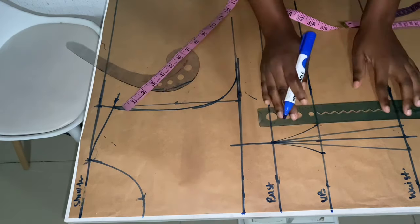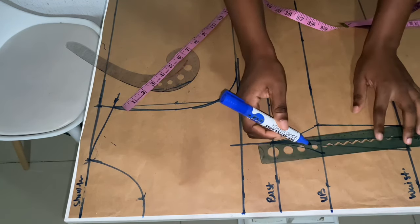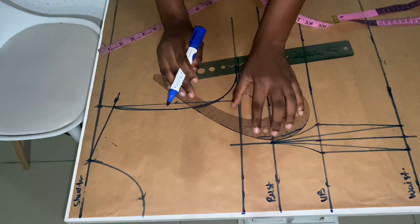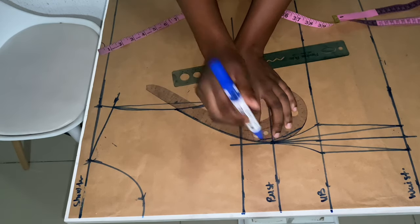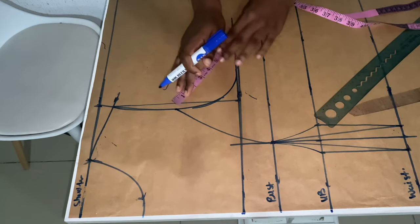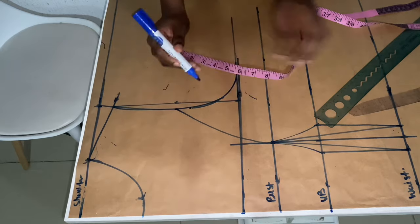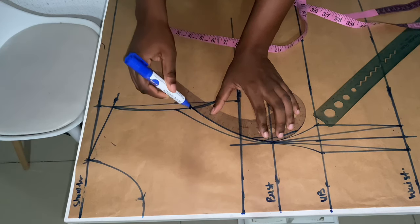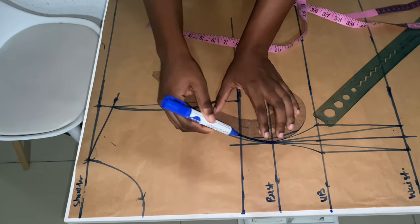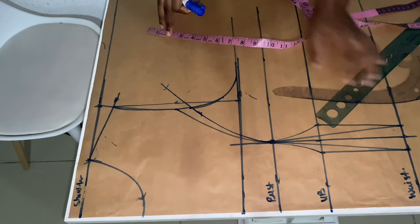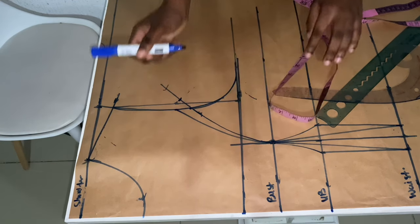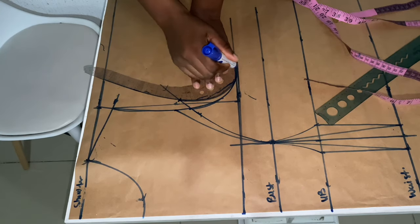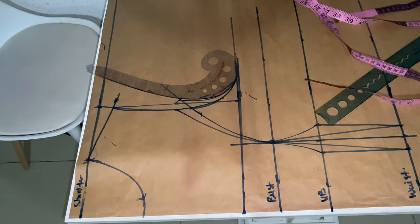Now you're going to connect your line to the waist. From the bust point we're going to connect a line to the middle part of the armhole — where we divided it into two to get the curve. Then we come down by one inch from the middle point of the armhole and connect the line to the bust point. I'm bringing out an extra one inch because in the process of joining everything we'll come short of fabric, so that one inch makes everything connect together.